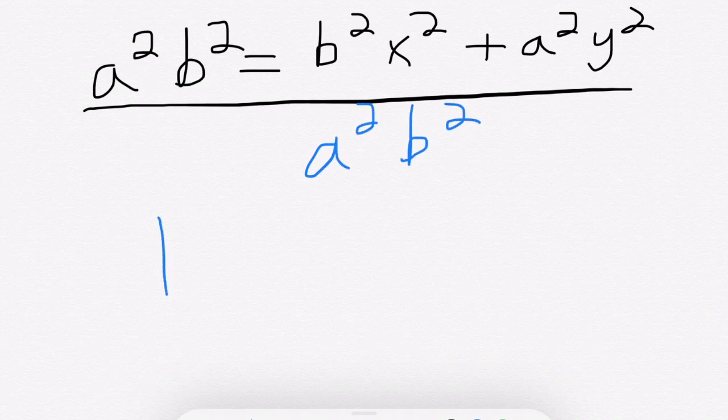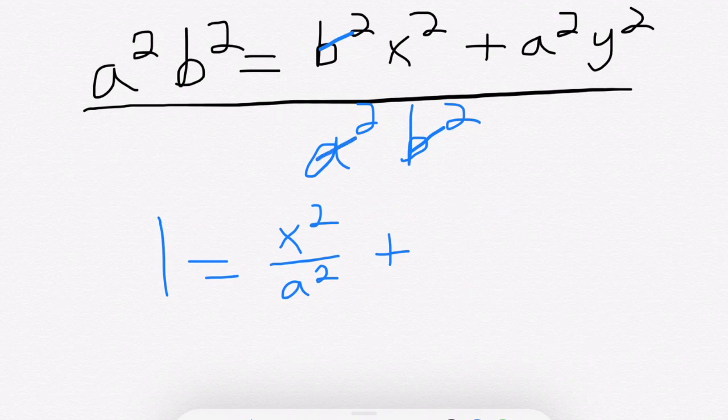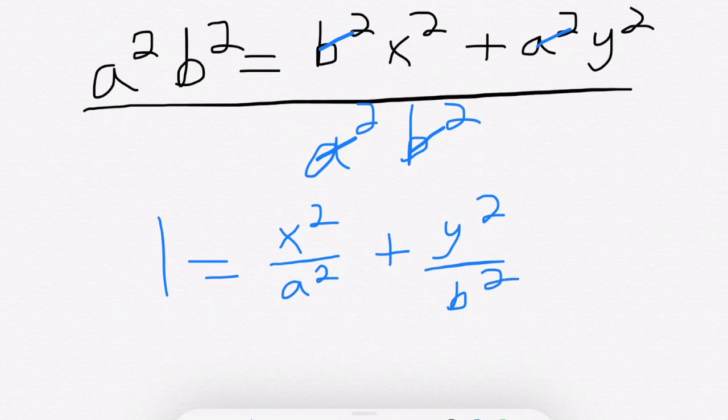This doesn't quite look like the equation of the ellipse we know, but if we divide both sides by a squared b squared, what we are left is 1 equals, over here the b squareds would cancel, and I get x squared over a squared plus, and here the a squareds will cancel, and we'll get y squared over b squared. And that is indeed the equation we were expecting to get.